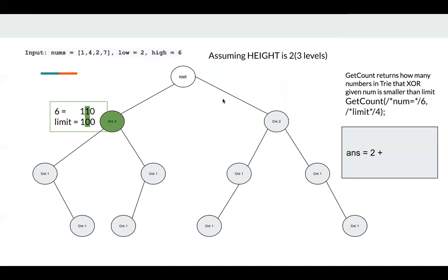In this case, the bit of limit is 0. The bit of 6 is 1. Assuming if we go to the left part, those numbers have bit 0 in this case. 0 XOR 1 is 1, which means all elements in this branch after XOR are greater than limit. So we don't need to care about them since they are greater than limit. We want to get the number smaller than limit.